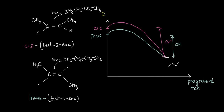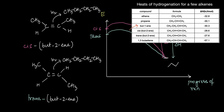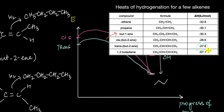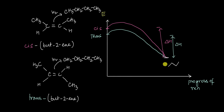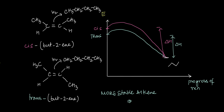Looking at the experimental data, trans-but-2-ene has a slightly lower heat of hydrogenation compared to cis-but-2-ene, which confirms this reasoning. We can now state a general rule: if the product formed on hydrogenation of two different alkenes is the same, then the more stable the alkene, the lower will be its heat of hydrogenation.